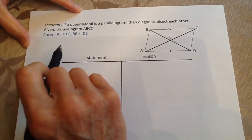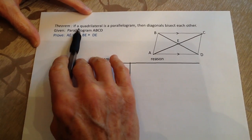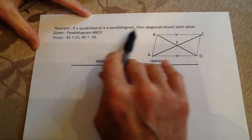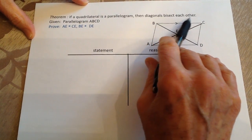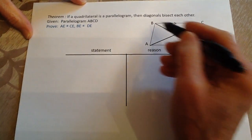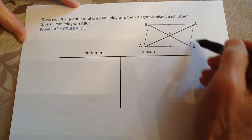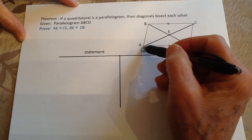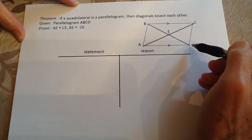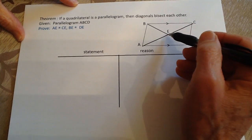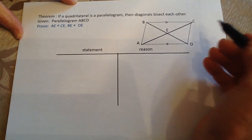We're going to do a proof of the theorem: if a quadrilateral is a parallelogram, then the diagonals bisect each other. Here is our parallelogram ABCD, and the diagonals are AC and BD, and they bisect here at point E. That's what we're going to try to prove.